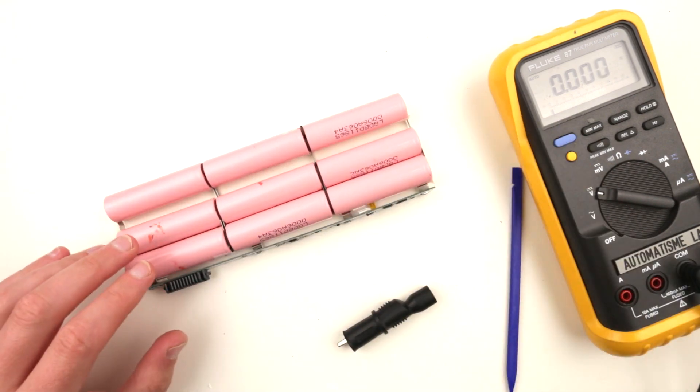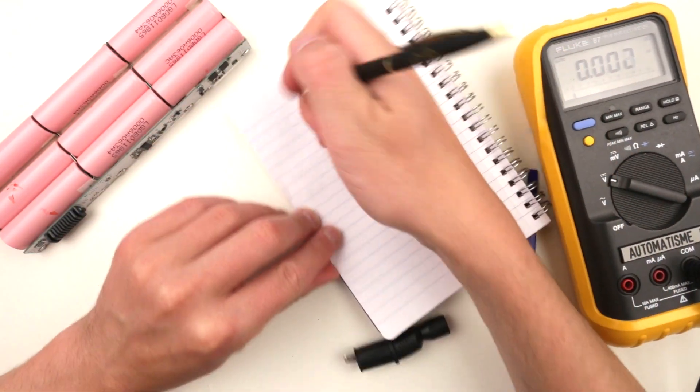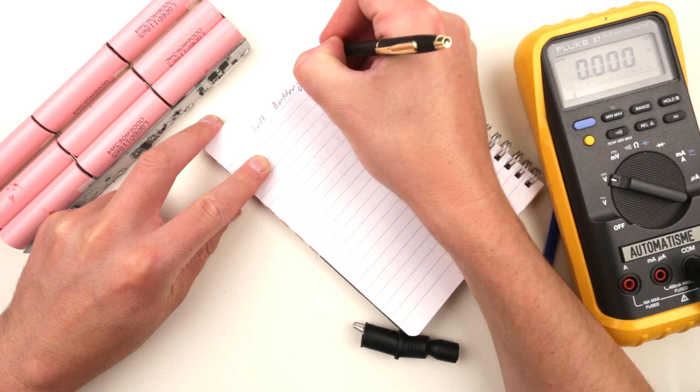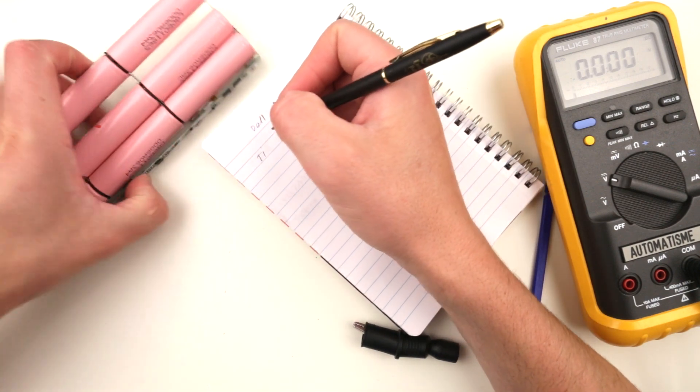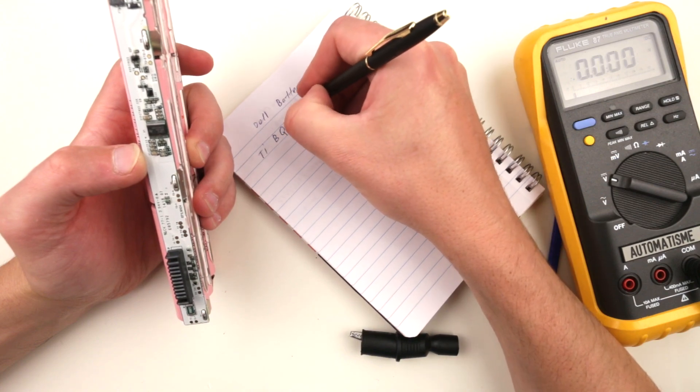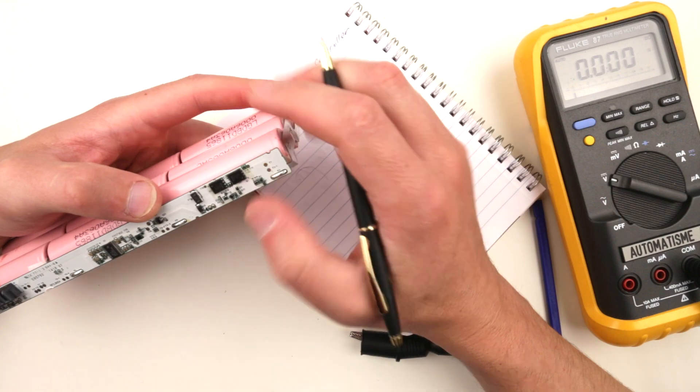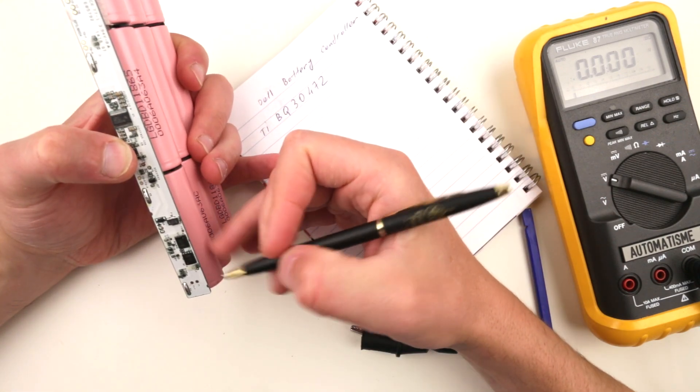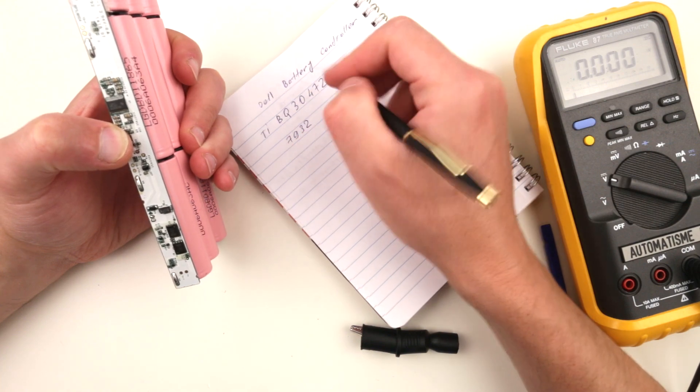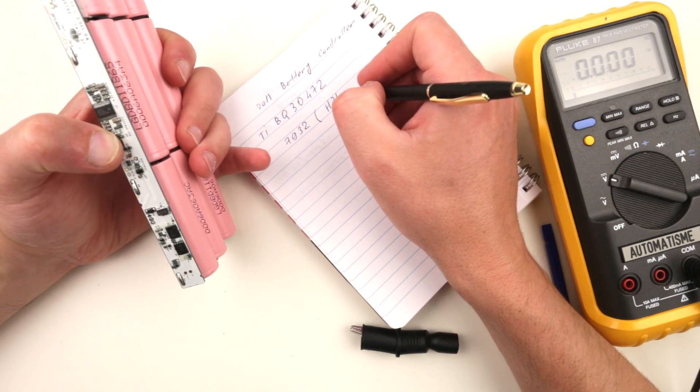Let me make notes. Dell battery controller. We have TI BQ30472, then one chip I can't read, and then BQ317932. Let me take a look at what those are.